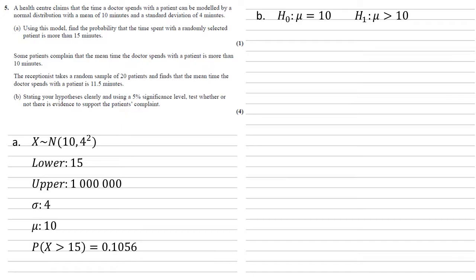We're now dealing with a sample, so our model is similar to before but X̄ is modelled by a normal distribution with a mean of 10. We must be careful with the standard deviation: because we have a sample size of 20, we divide the variance by 20. So the variance is 4² divided by 20, or equivalently the standard deviation is 4 over root 20.